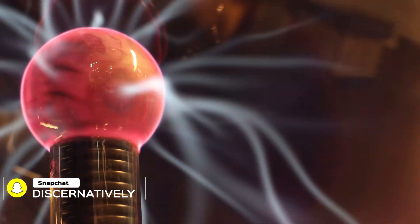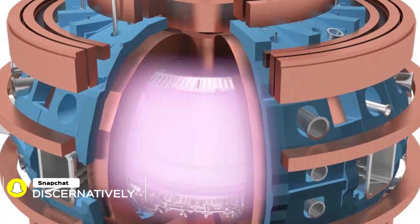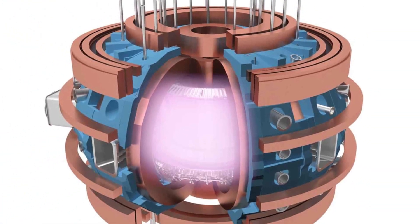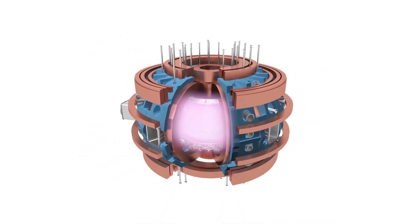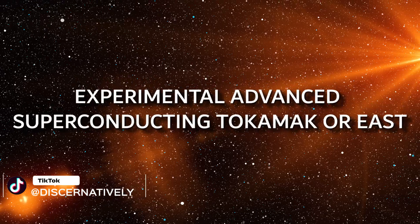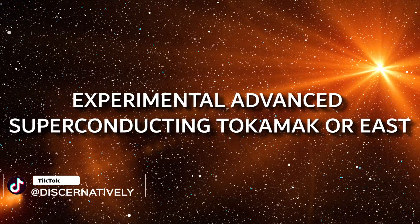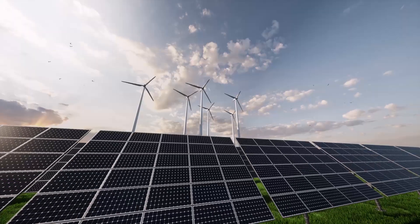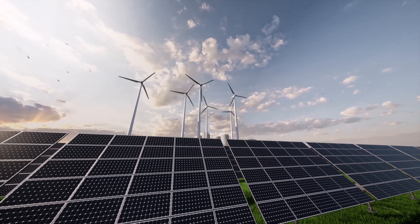And get this, when the atoms fuse together, they generate enormous amounts of energy. But don't worry, they keep the plasma contained with magnets and supercooling technology. It's like science fiction, but it's real. This sun-on-Earth machine is called the Experimental Advanced Superconducting Tokamak, or EAST for short, and its mission is to create sustainable and limitless energy.